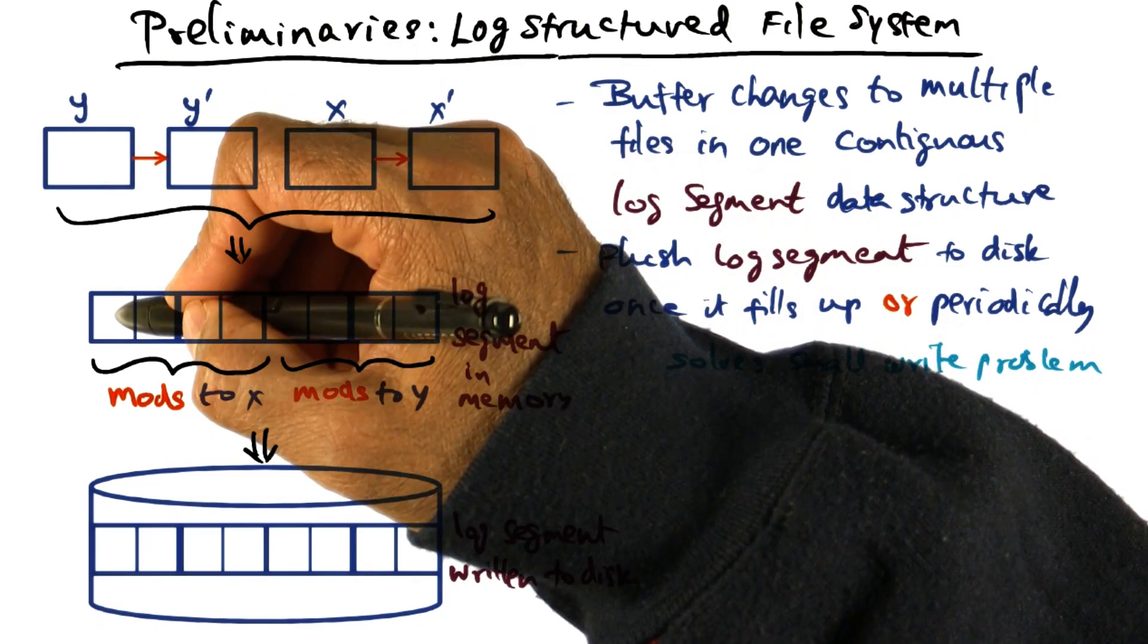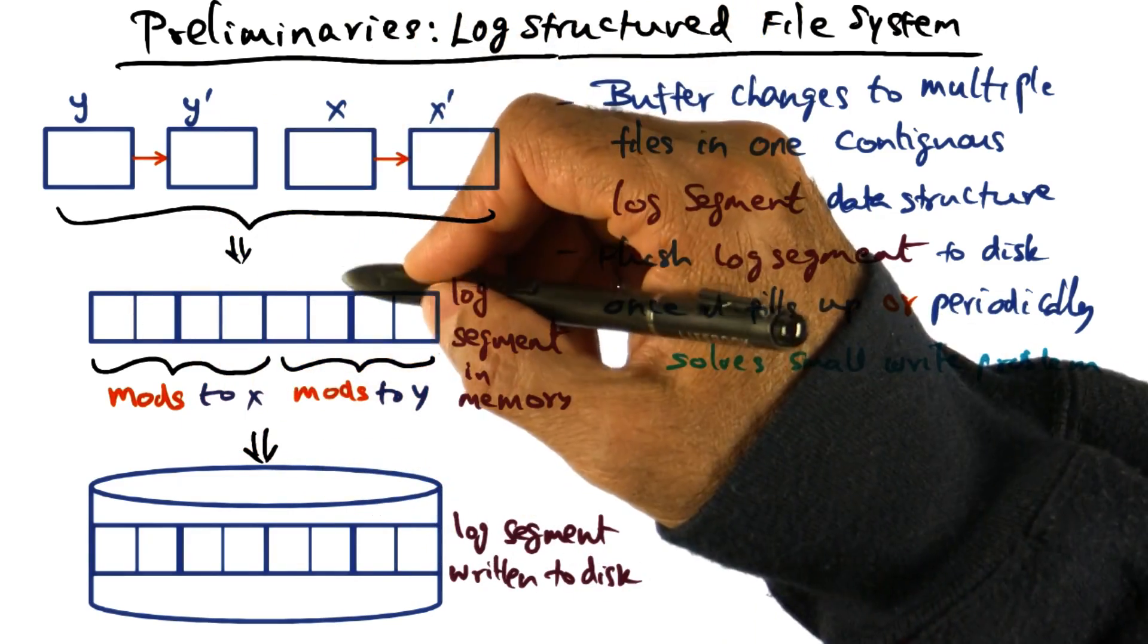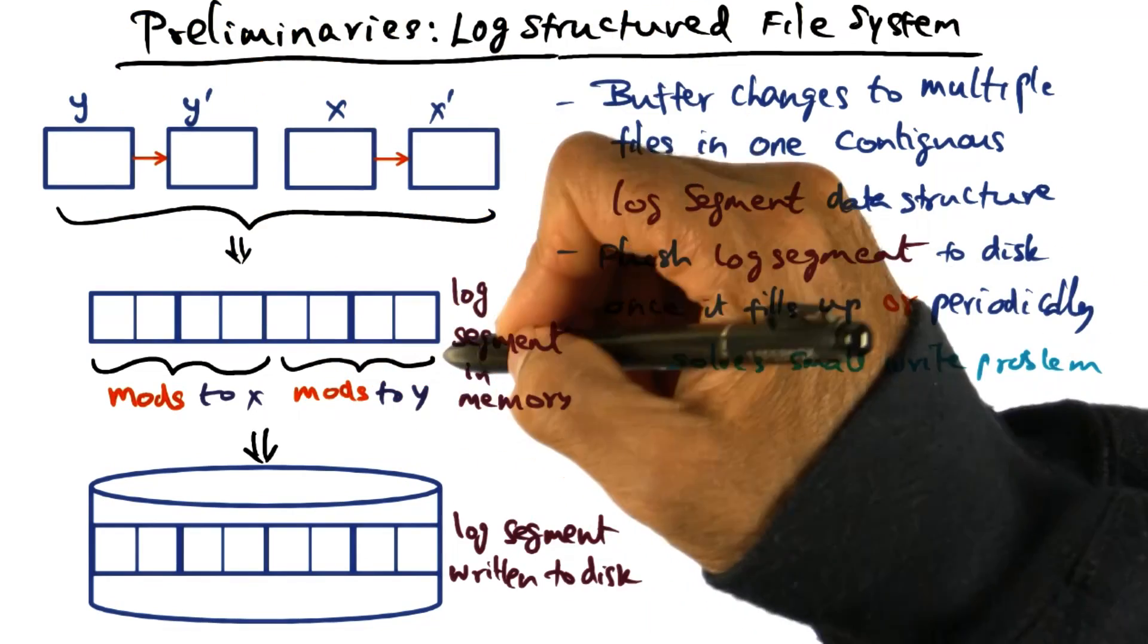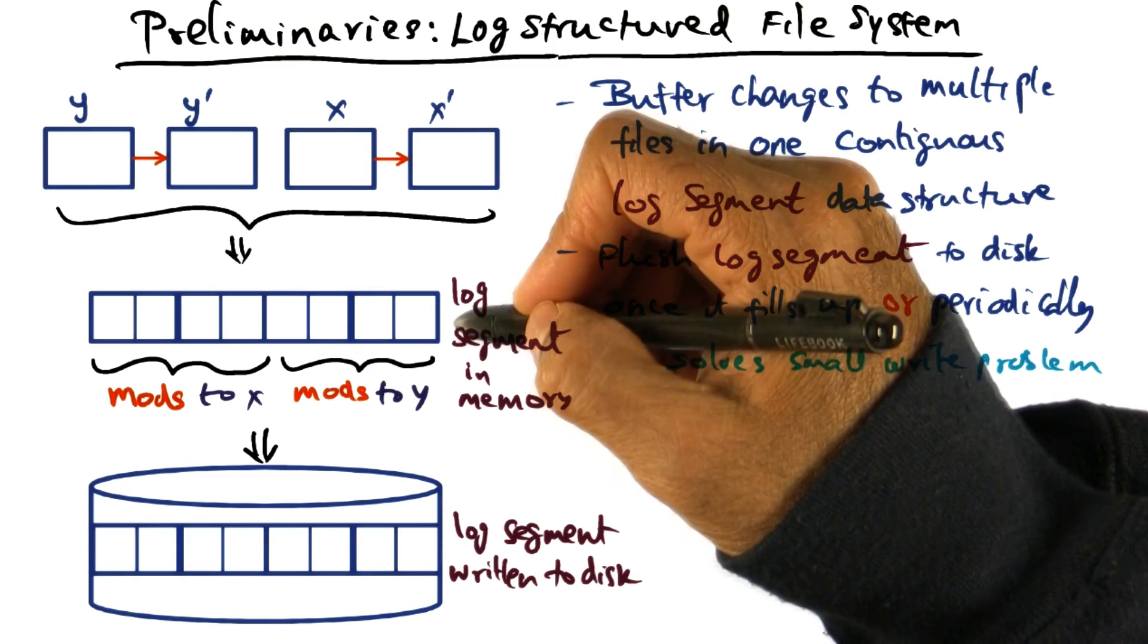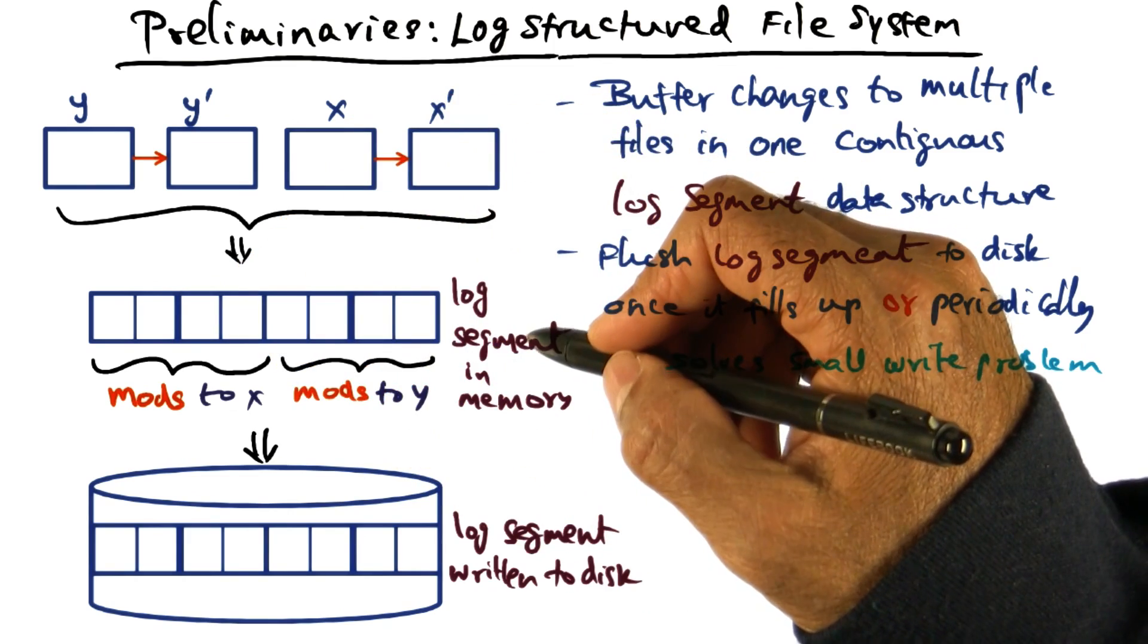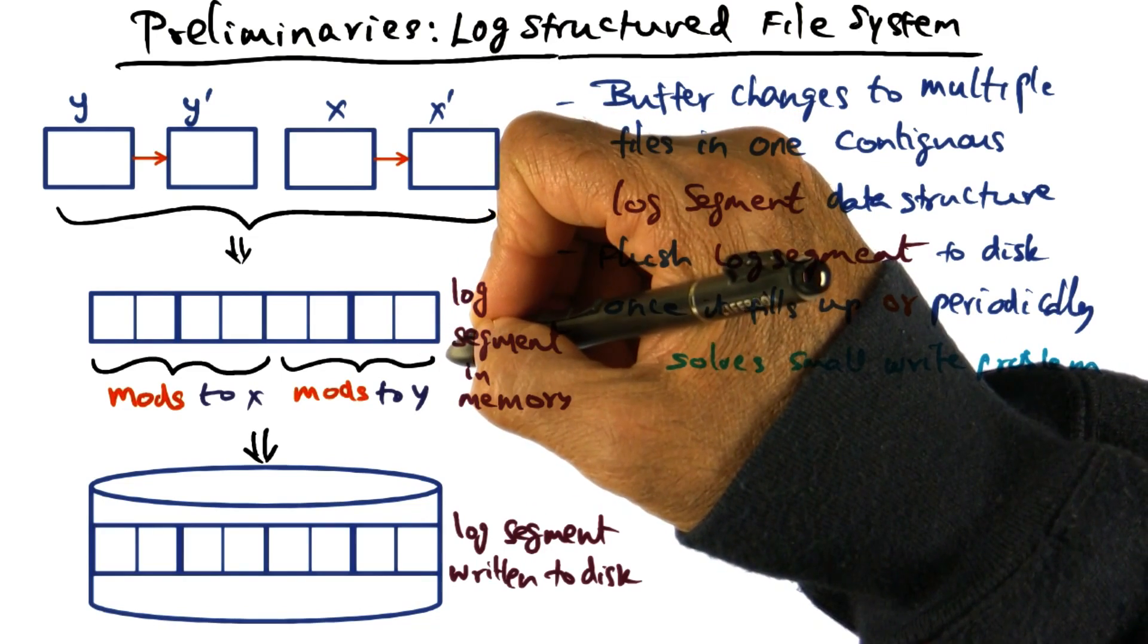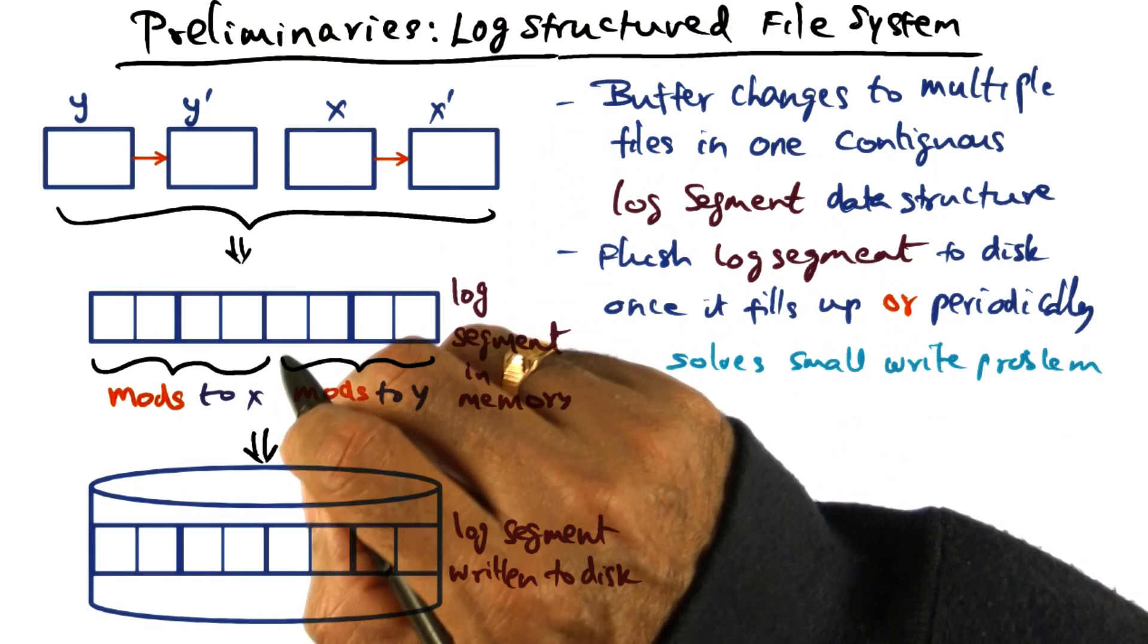So I have a log record that says what are the changes I made to this file x. Similarly, I have a log record of all the changes I made to this file y. And this is being done in a data structure which I'll call log segment. And I'll keep this log segment data structure in memory to make it fast in terms of the file system operation.